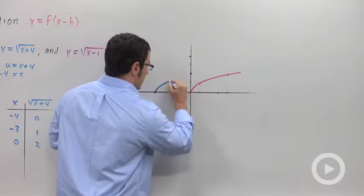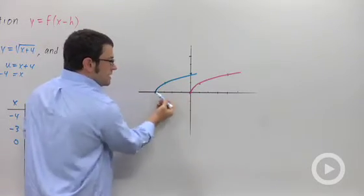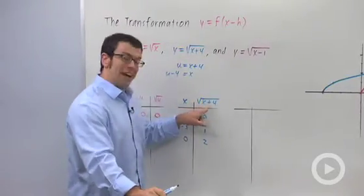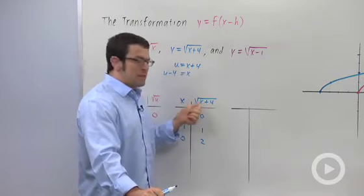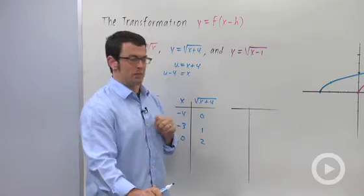So, notice what happened. This graph has basically shifted to the left 4 units. Note, I had x plus 4 and the graph has shifted to the left 4 units. The plus 4, you might think, shifts the graph to the right. It actually shifts the graph to the left. It's the opposite of what you think.